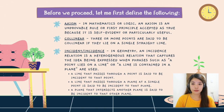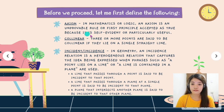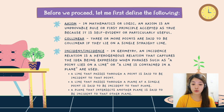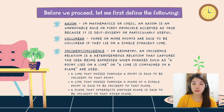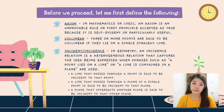But before we proceed, let me first define the following. First is axiom. In mathematics or logic, an axiom is an unprovable rule or first principle accepted as true because it is self-evident or particularly useful. Mathematicians assume that axioms are true without being able to prove them. However, this is not as problematic as it may seem because axioms are either definitions or clearly obvious. For example, an axiom could be A plus B equals B plus A for any two numbers A and B. As simple as that.